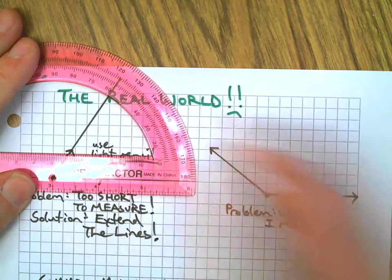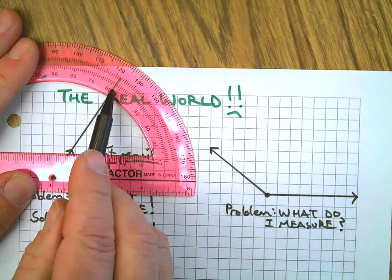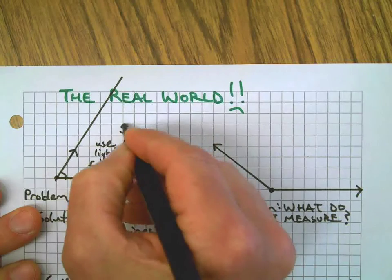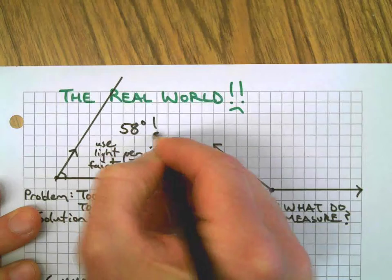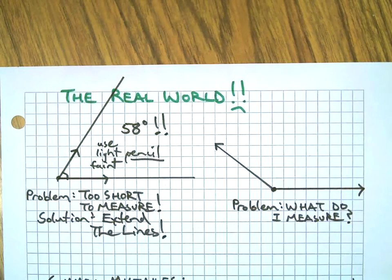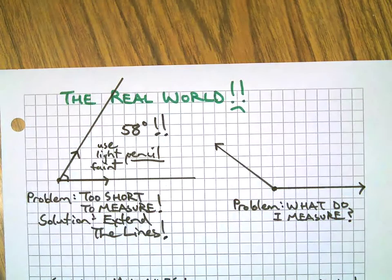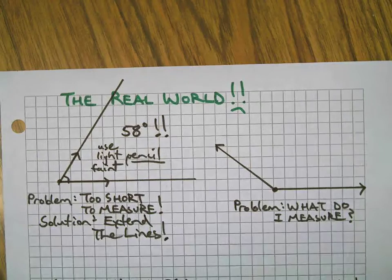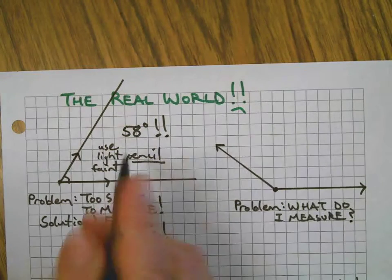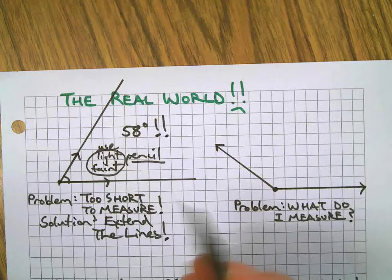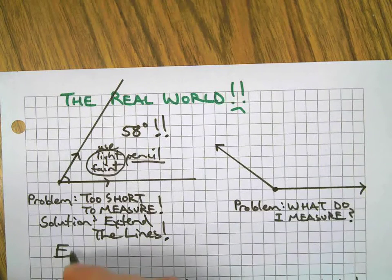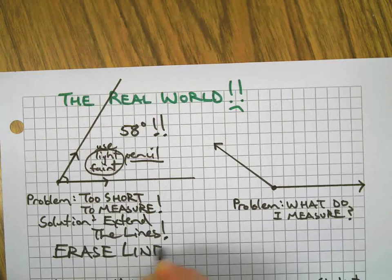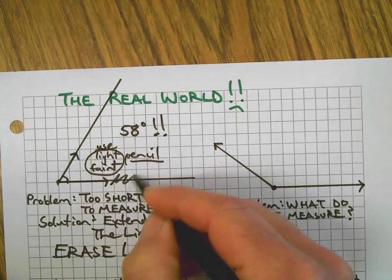Don't estimate, don't guess, don't say it wasn't long enough. Find a way to make it work. So here I drew some faint lines in the textbook and now look, I can read it perfectly well - it looks like it's about 58 degrees. Problem solved. And then when you're done, you drew a very light faint line, then erase it. Erase the line that you drew.